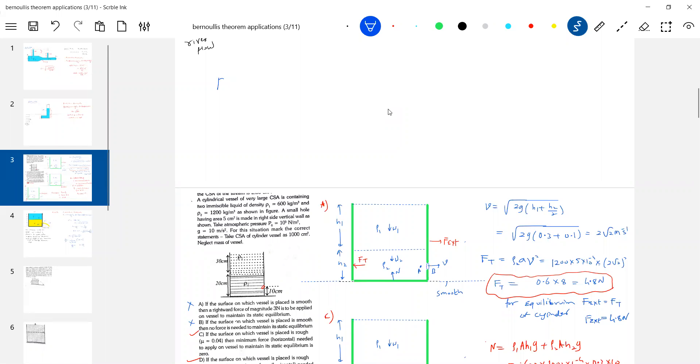I'll write all the equation: Pa plus Ua plus Ka equal to Pb plus Ub plus Kb. Pressure at A will be P naught plus rho 1 g H1... Let me substitute all the values here. Rho 1 g H1 will be 0.3, rho 2 g this will be 0.1. Pressure at B will be P naught.